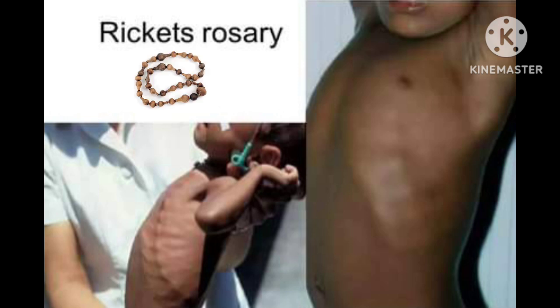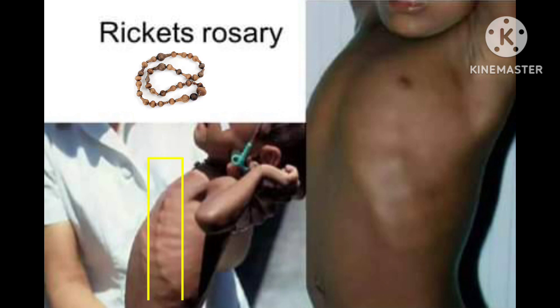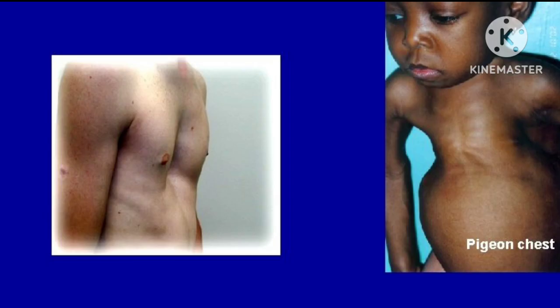Chest signs of Ricketts include the rachitic rosary, which creates a row of beads under the skin on clinical examination. These are seen secondary to costochondral junction widening. The chest may also present with Harrison's groove — a groove at the lower end of the ribcage — along with flaring of the rib margins.